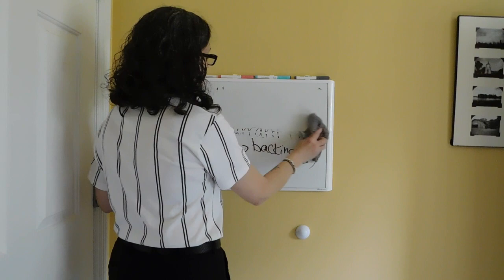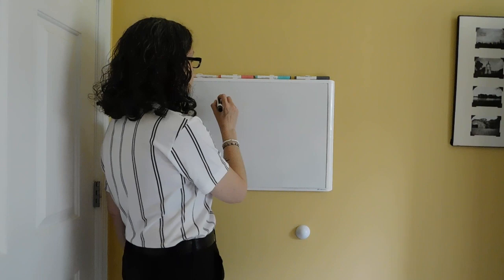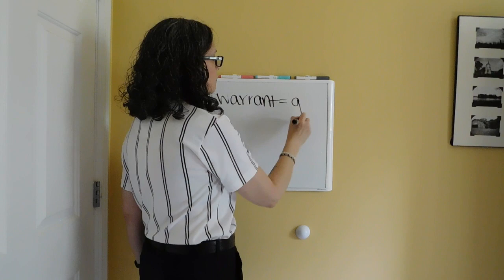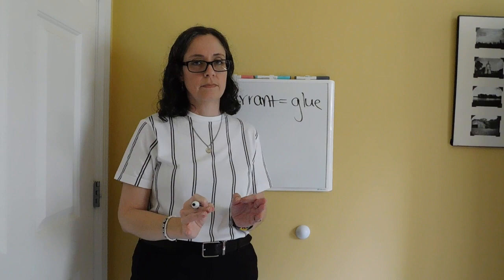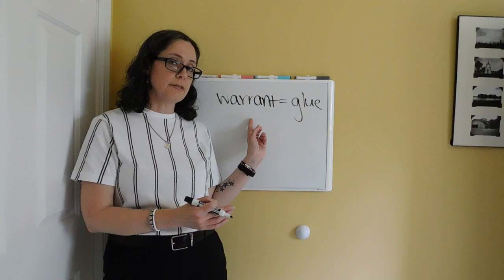So let's talk about the warrant. One of the easiest ways to comprehend the warrant is to think of it as glue — this is the glue that is holding your argument together. In other words, if people do not accept your warrant, the glue holding your argument together, your whole argument fails.